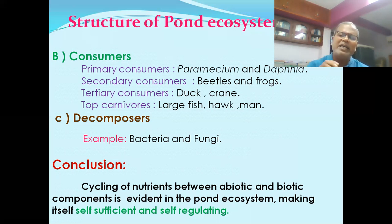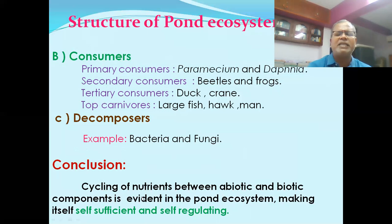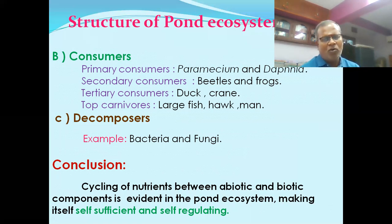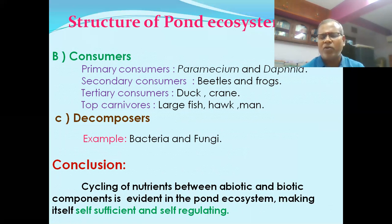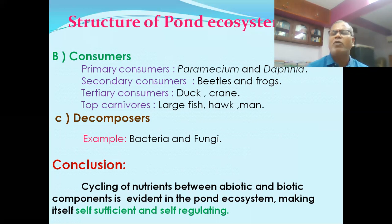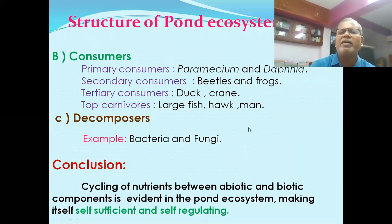In conclusion, cycling of nutrients between abiotic and biotic components is evident in the pond ecosystem, making it self-sufficient and self-regulating. This is why a pond acts as an ecosystem. Thanks a lot for listening — thank you very much.